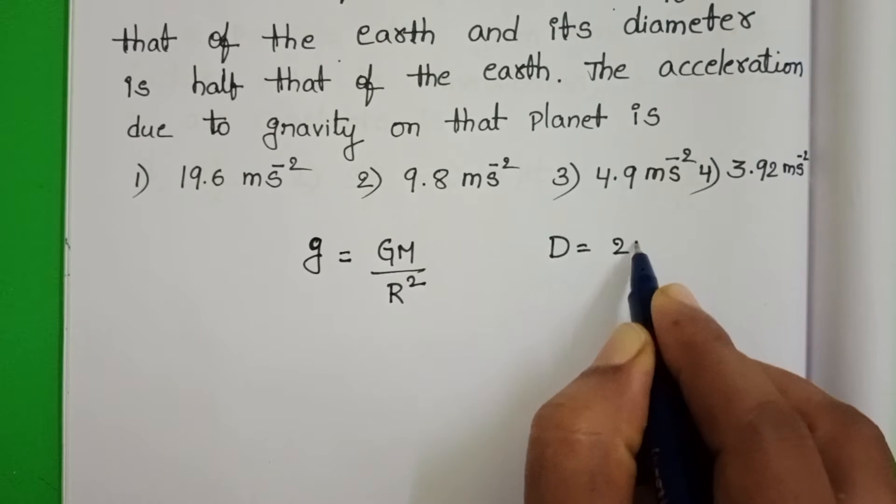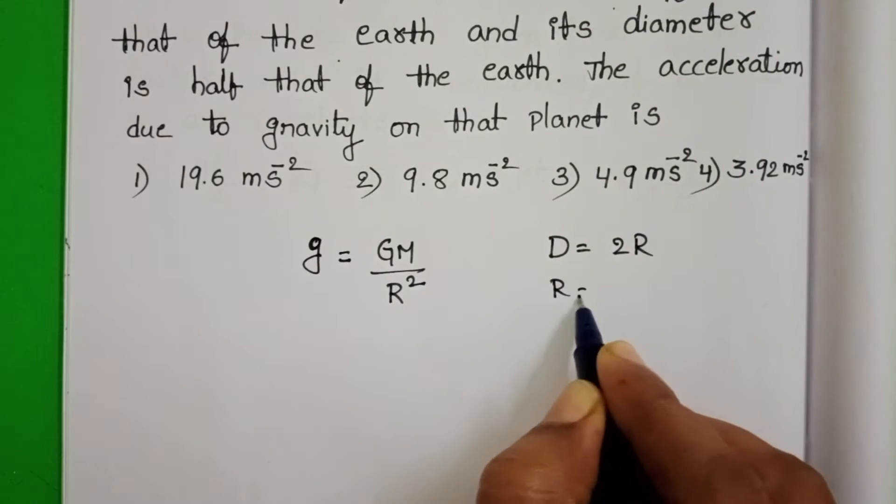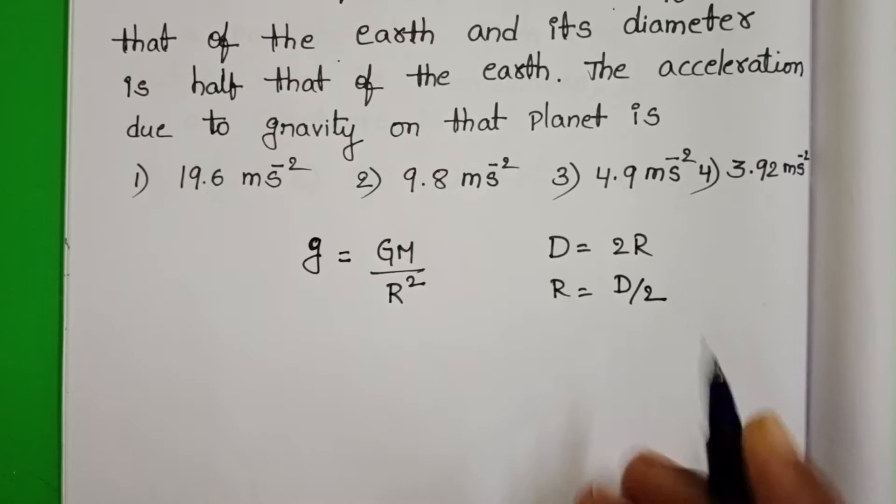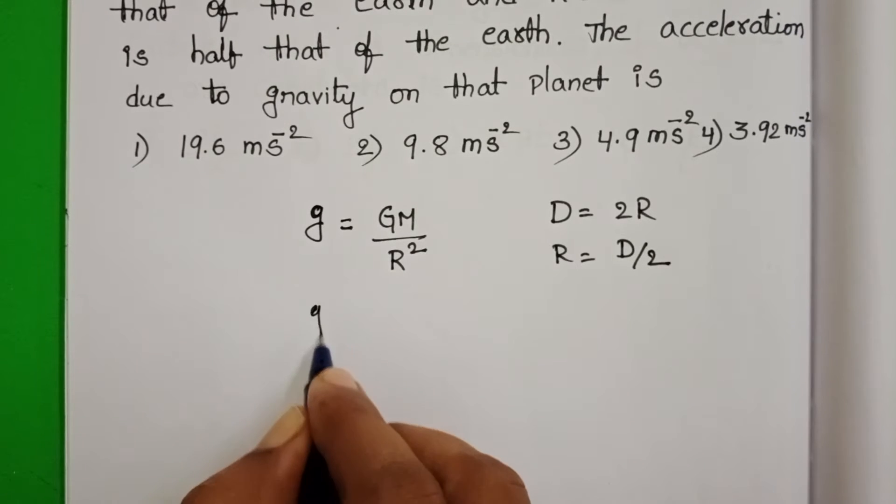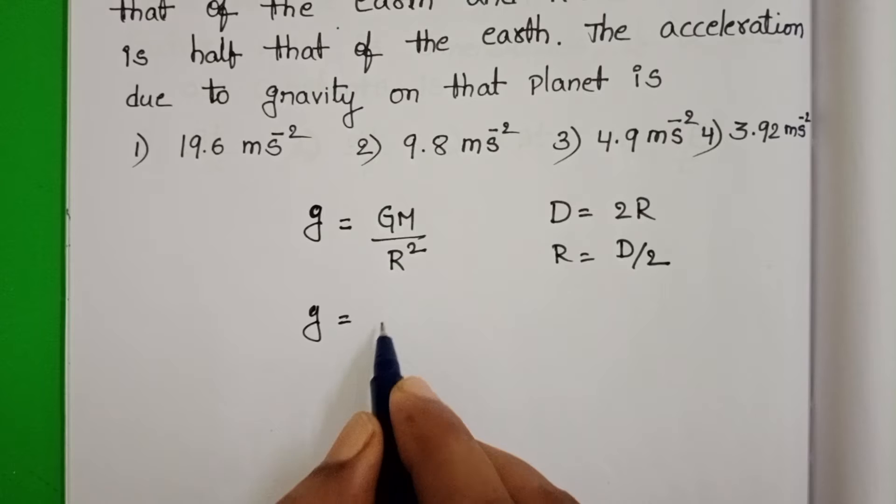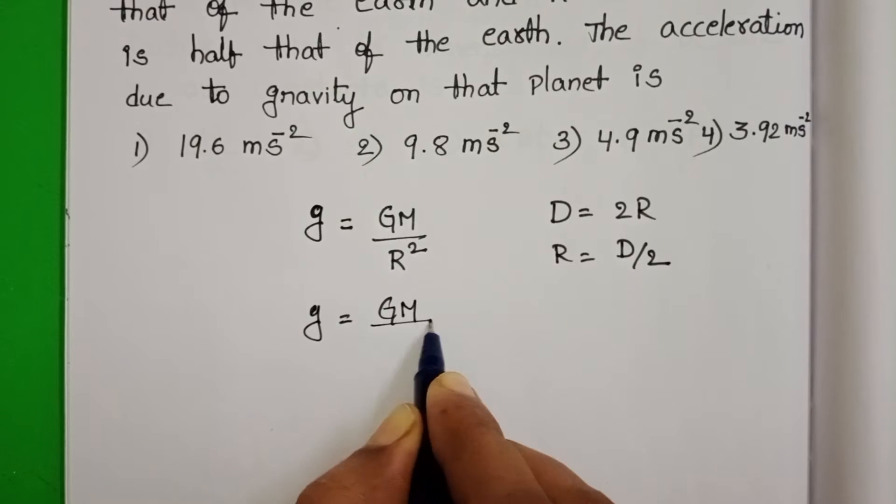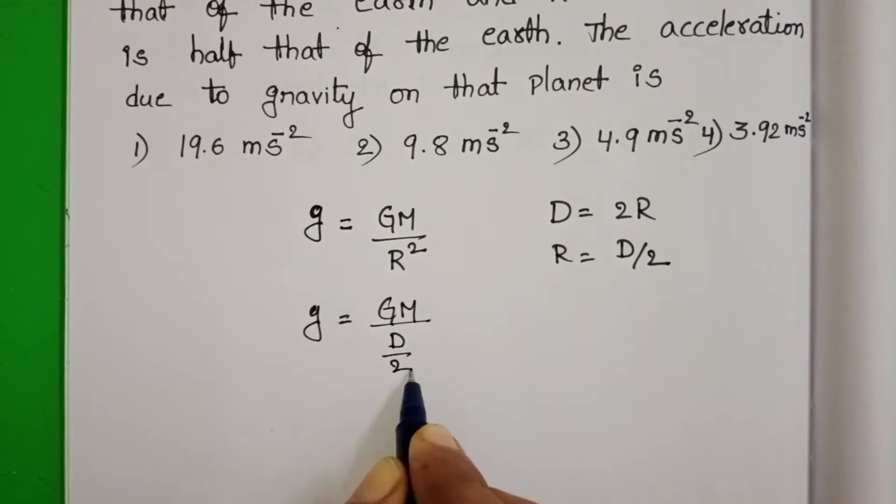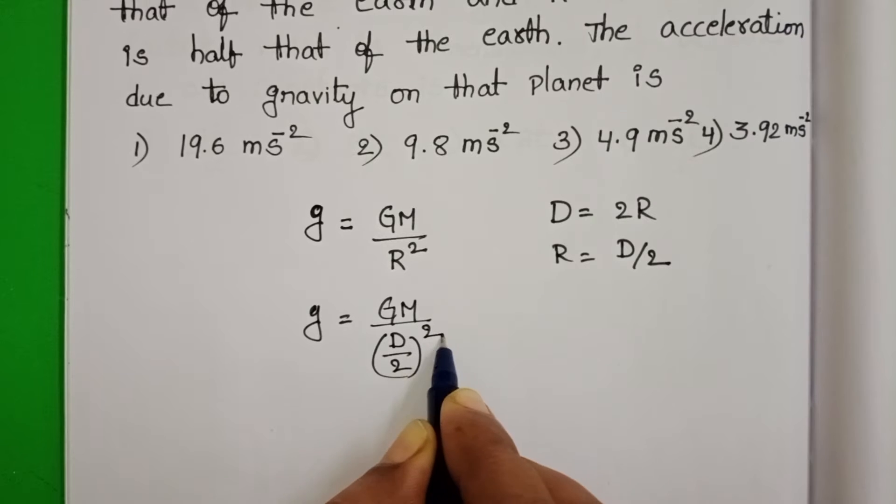Diameter is equals to 2R. Then R is equals to diameter by 2. Now write the formula in diameter GM by in place of radius take D by 2.